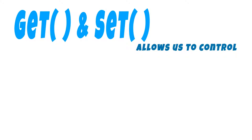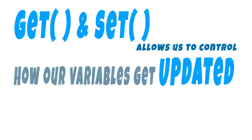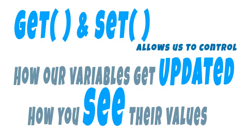So that's what we're doing with this functionality. The get and set allows us to control how our variables get updated and how you find out what the values of those variables are. We're just ensuring that only the Health Manager can adjust these values and we use the get and set function to tell other scripts what these values are and to allow them to request a change to them.